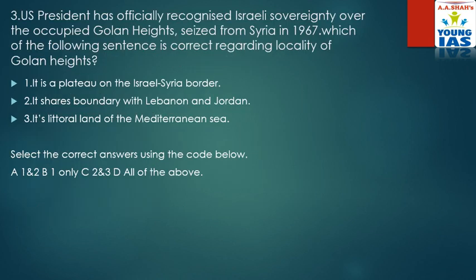Next question: US president has officially recognized Israeli sovereignty over the occupied Golan Heights, seized from Syria in 1967. Which of the following sentences is correct regarding the location of Golan Heights? Option 1: it is a plateau on the Israel-Syria border — yes, right. Option 2: it shares a boundary with Lebanon and Jordan — right. Option 3: it's a littoral land of the Mediterranean Sea — no, this is wrong. It is not a littoral land of the Mediterranean Sea; these are the Golan Heights specifically. So the correct options are 1 and 2.